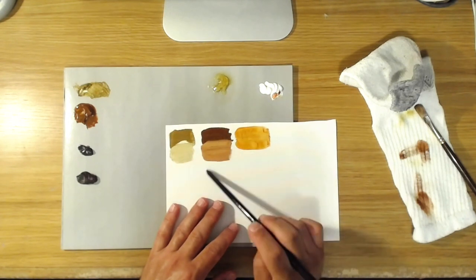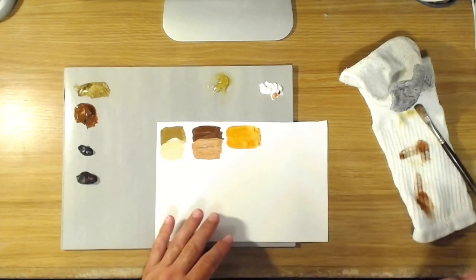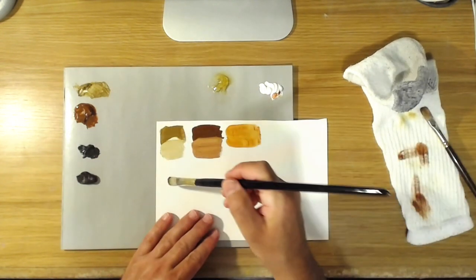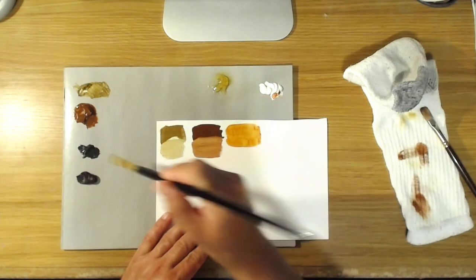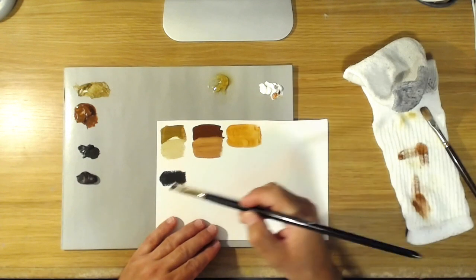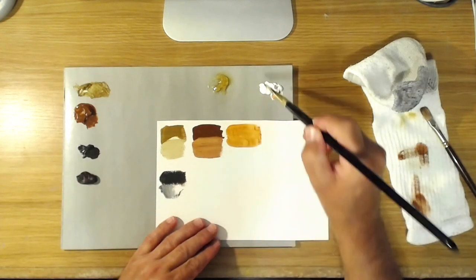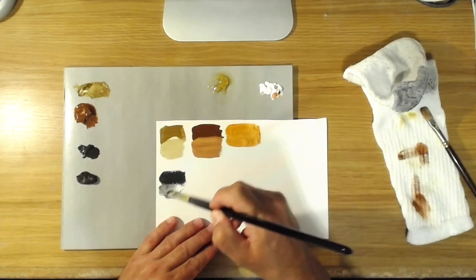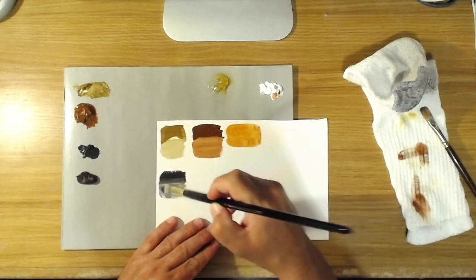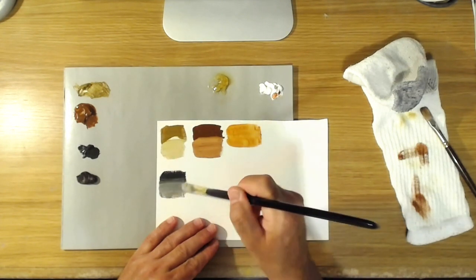The umbers do the same thing basically. Here's a little raw umber, which is pretty dark in mass tone, but if you lighten it up with some white you'll see it's a pretty neutral sort of cool brown tone. That's the raw umber.